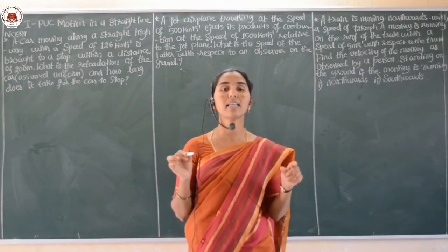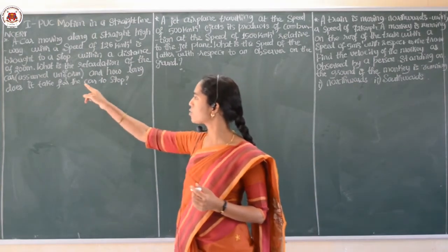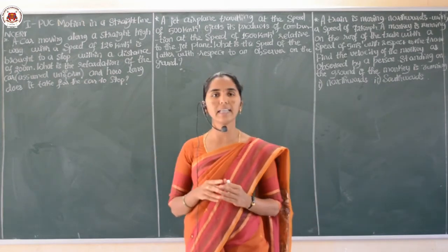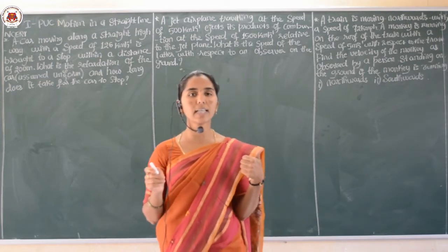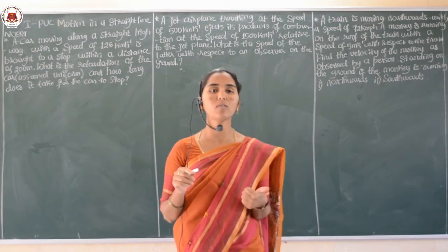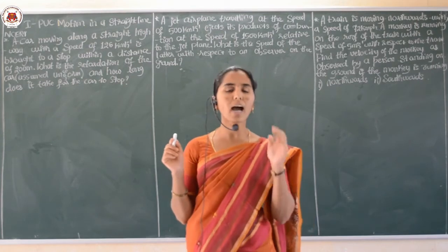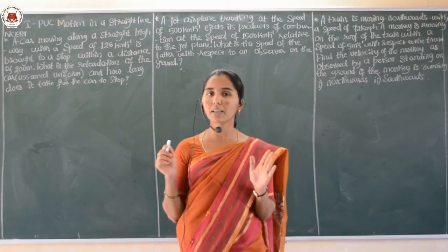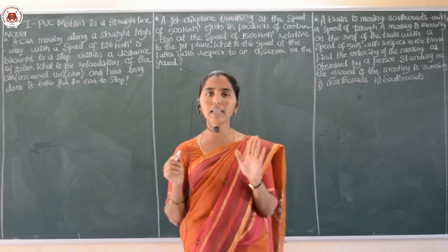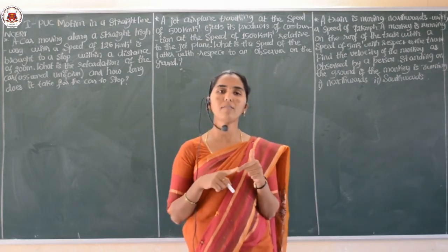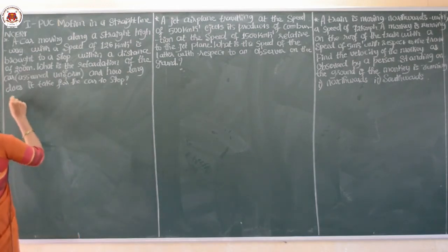Retardation means deceleration — negative acceleration. We assume uniform deceleration. So first we need to find the value of acceleration 'a.' The negative value will indicate retardation or deceleration. The second part asks: how long does it take for the car to stop? The car doesn't stop immediately — it takes some time. Let's write down the given data.